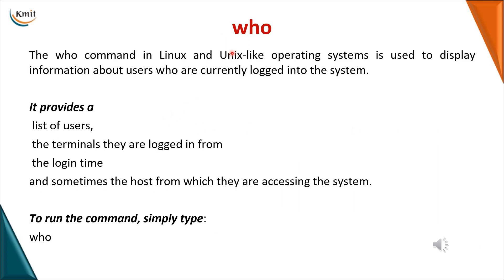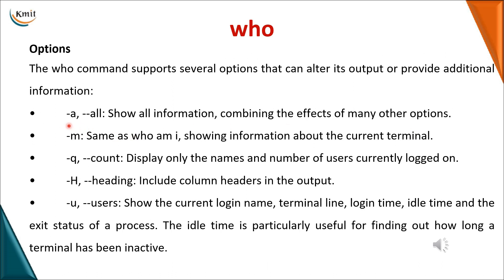The next command is who. As the name implies, it tells you who the current user is and, since Linux is a multi-user operating system, it can provide the list of all users currently using the system, the terminals they have logged in on, their login time, and sometimes the IP address of the system they are using. Simply type 'who' to get this information. Options include: -a to show all information, -m for only the username, -q for the count of users, -h to include headings, along with details like idle time and how long each user has been inactive.